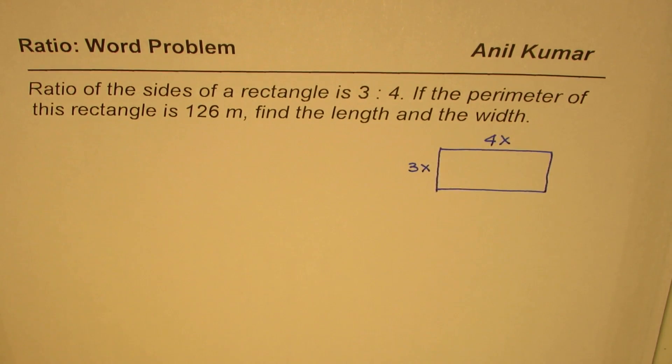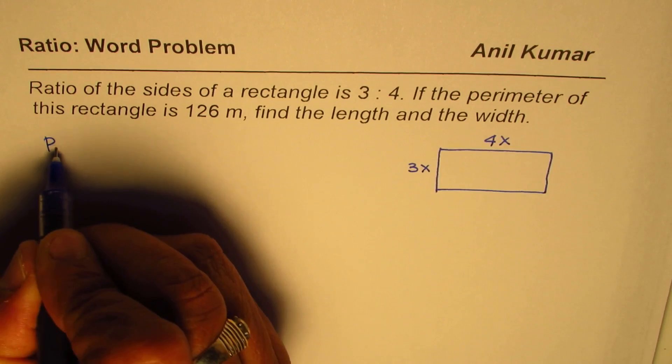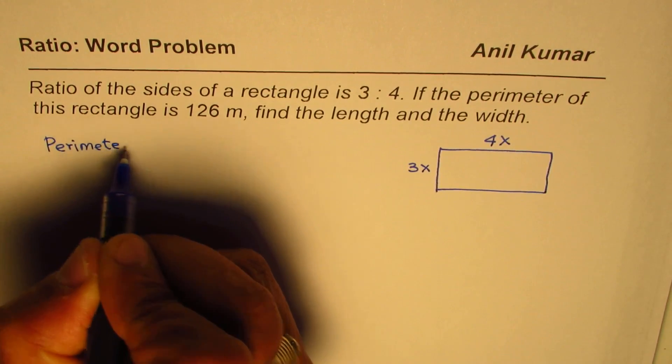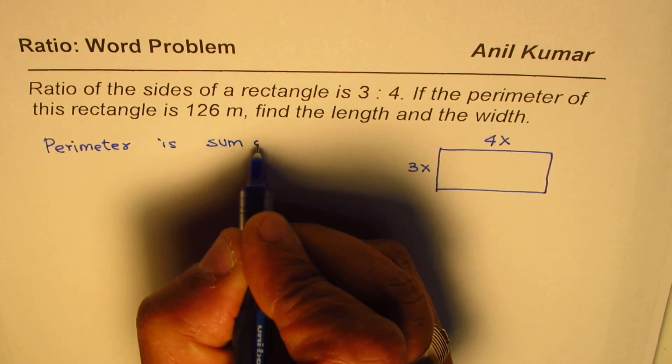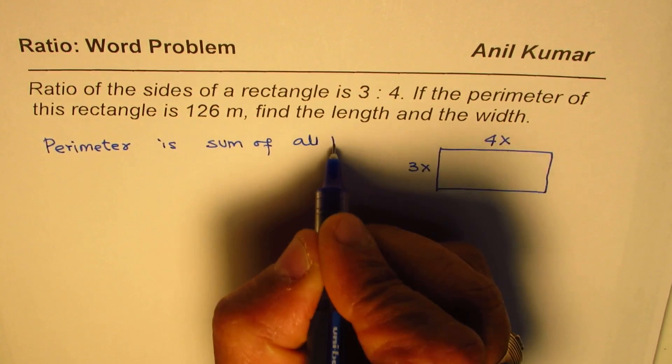We are given that the perimeter, right? Perimeter is sum of all the sides. So perimeter is sum of sides, sum of all the sides.